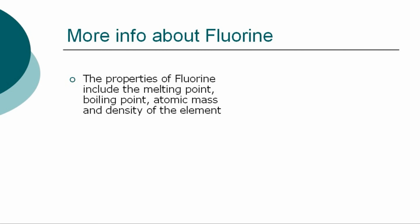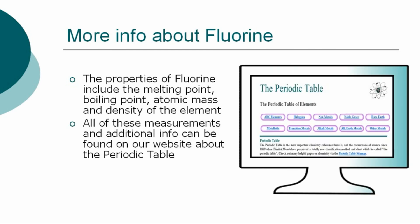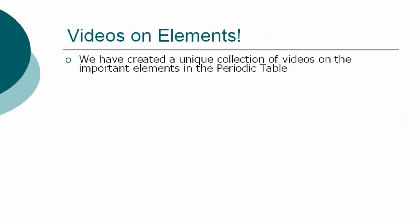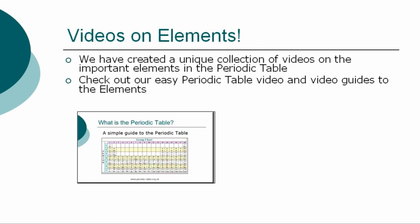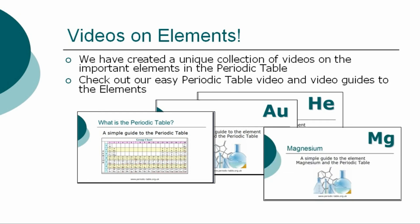The properties of fluorine are classified by many other factors, including the melting point, boiling point, atomic mass, and density of the element. All of these precise measurements, together with additional facts and information, can be found on our website. So ends our simple guide to the element fluorine. Check out our easy video guides to the elements via our website.